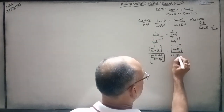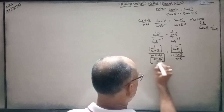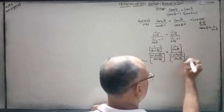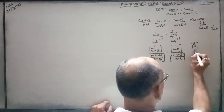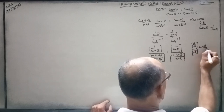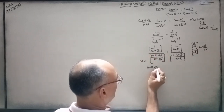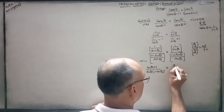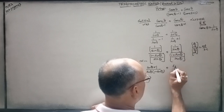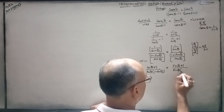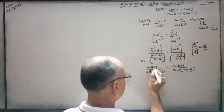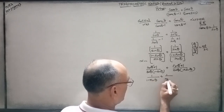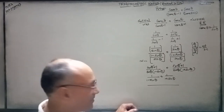Sine theta, one upon sine theta. Now one plus sine theta upon sine theta — this line is sine theta, one upon sine theta. It is coming back to the same place. Now sine theta into one upon sine theta, and one minus sine theta will come here. Plus this: sine theta over one minus sine theta, plus one upon one plus sine theta. Again you will take LCM.